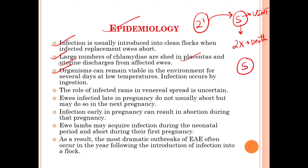The organisms can remain viable in the environment for several days at low temperature, and infection occurs by ingestion. In a sheep farm, the bacteria shed in placentas and uterine discharges can be ingested by healthy sheep, which then acquire the infection.